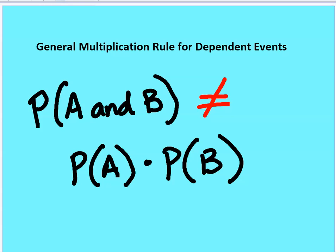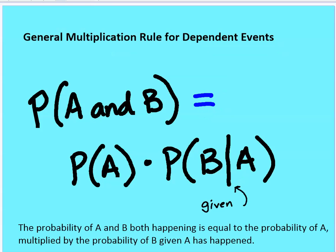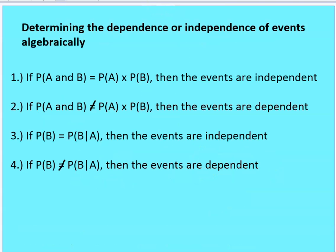The general multiplication rule for dependent events: P(A and B) = P(A) × P(B|A), not simply P(A) × P(B). For independent events, P(B|A) equals P(B), so the simpler form applies. To determine dependence or independence algebraically: if P(A and B) = P(A) × P(B), the events are independent; if not, they are dependent. Similarly, if P(B) = P(B|A), the events are independent; if not, they are dependent.